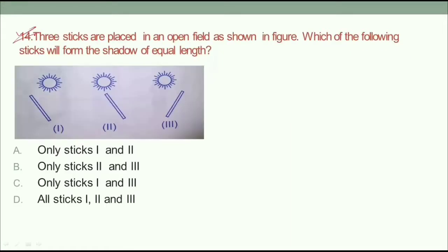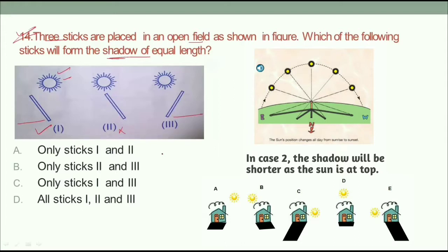Question number 14: three sticks are placed in an open field as shown in the figure. Which of the following sticks will form a shadow of equal length? The sun is positioned here, and the shadow of the first stick will be equal to its length, and similarly the third stick's shadow will be equal to its length. So accordingly, the answer will be first and third — option C.